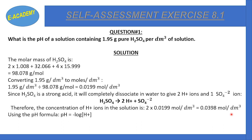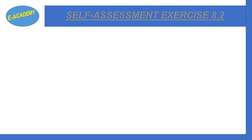The pH formula is: pH = −log[H⁺]. Substituting the H⁺ ion concentration of 0.0398, we get pH = 1.40. Now moving on to self-assessment exercise 8.2.